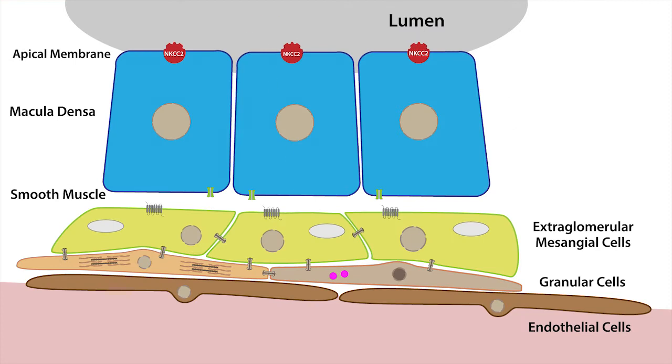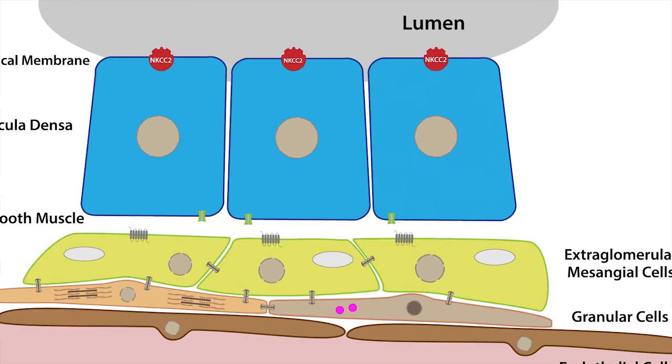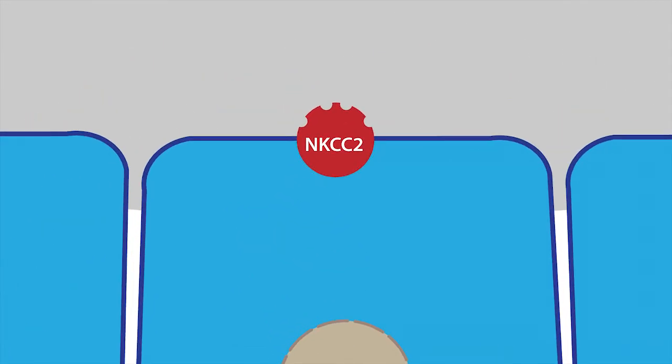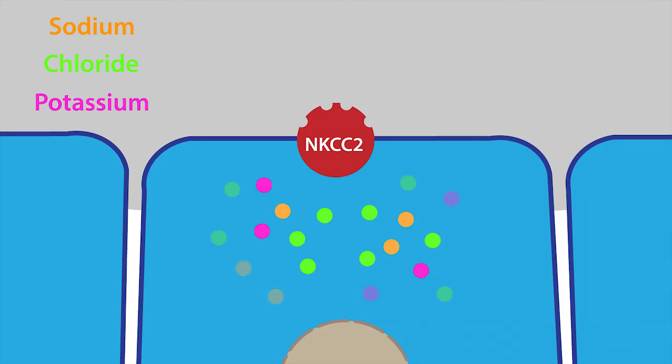So how does an increase in luminal sodium chloride result in vasoconstriction of the afferent arterial? To start with, sodium and chloride ions are constantly being transported from the ultrafiltrate into the macula densa cells via the NKCC2 co-transporter along with potassium. When the concentration of sodium chloride increases in the ultrafiltrate, as in the case of increased GFR, intracellular sodium chloride increases also due to the continual transport of sodium chloride by the NKCC2 co-transporter.